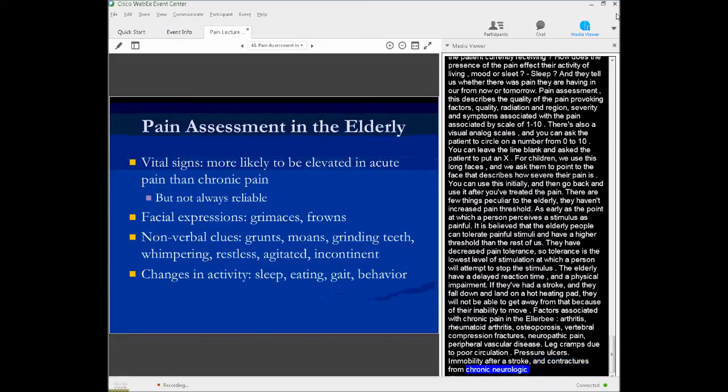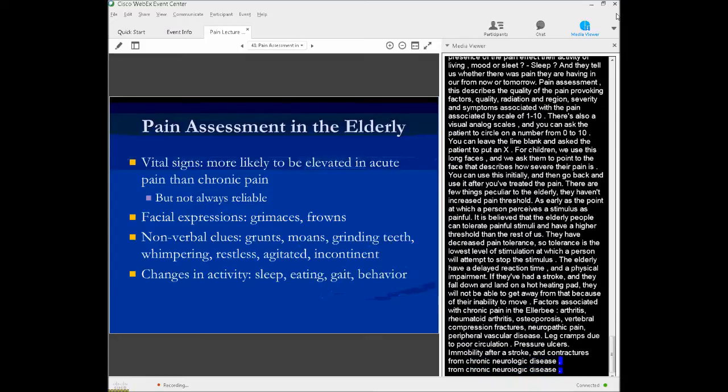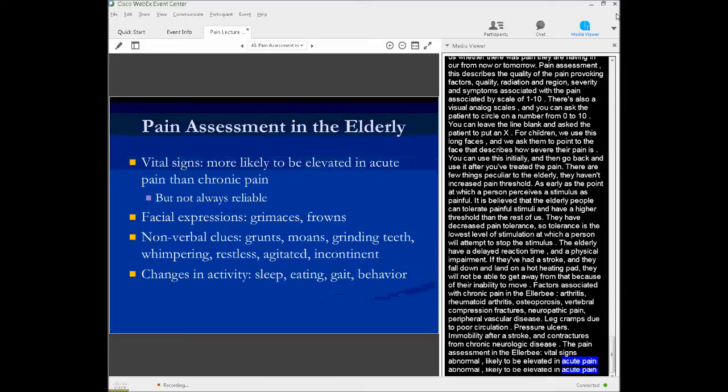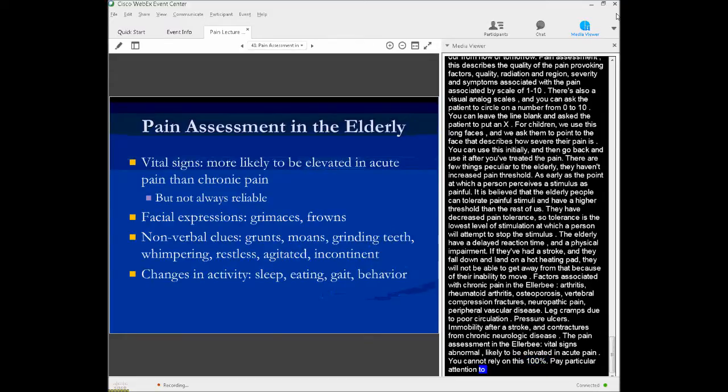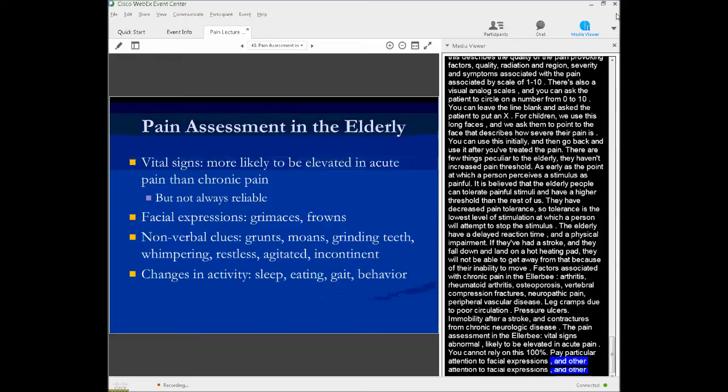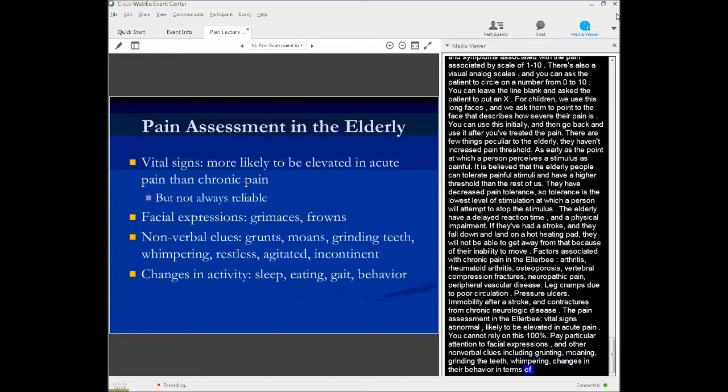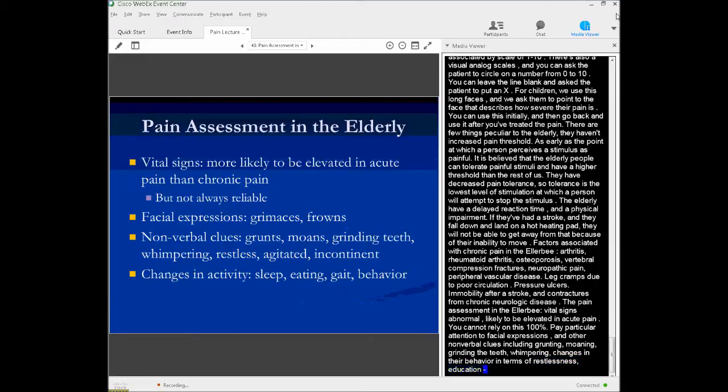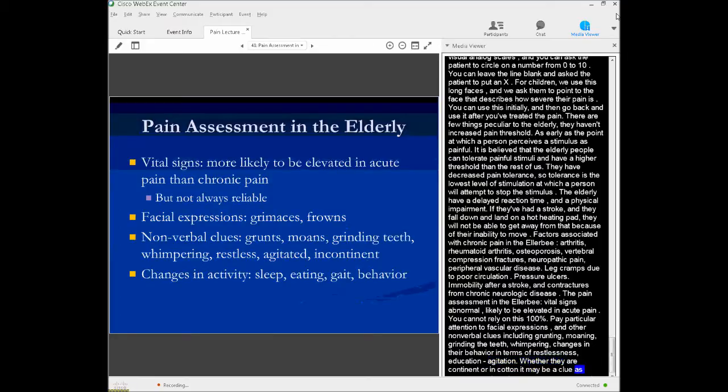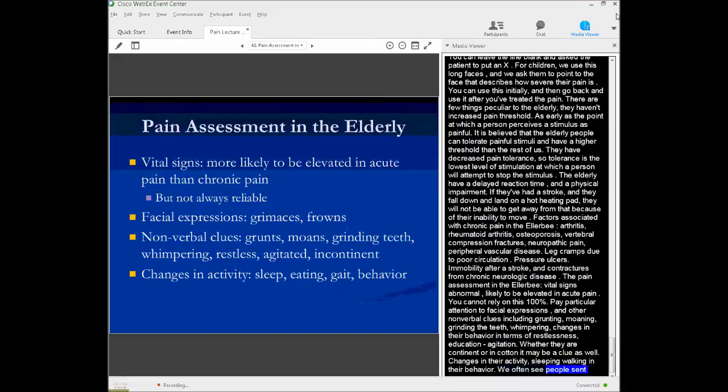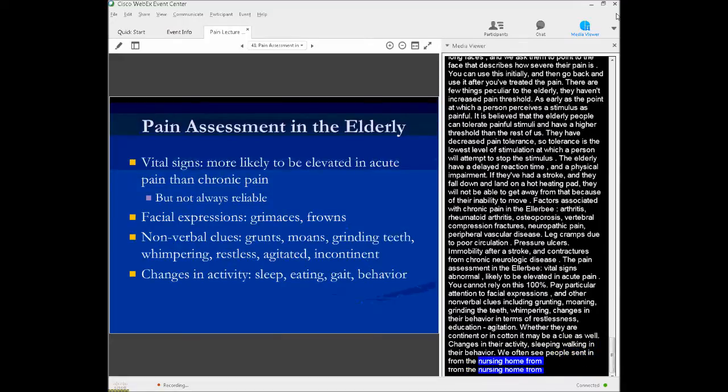Pain assessment in the elderly. Abnormalities in vital signs are more likely to be elevated in acute pain than chronic pain, but that's not always true. You can't rely on that 100%. You want to pay attention to facial expressions, that might be a clue, and other nonverbal clues, including grunting, moaning, grinding the teeth, whimpering, changes in their behavior in terms of restlessness, agitation. If they're normally continent and now they're incontinent, that might be a clue. Changes in activities, such as eating, sleeping, walking, and behavior might be another clue. We often see people in the emergency department who have been sent by the nursing home for no other reason than they're not eating, they're not sleeping, they're grimacing for no reason, and they need to be evaluated for a painful condition.